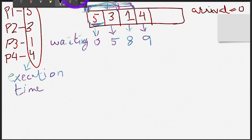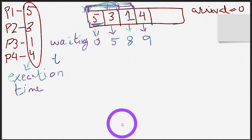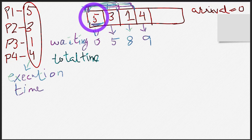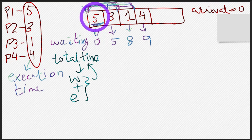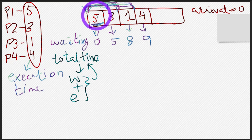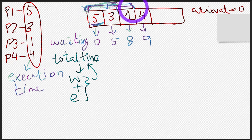That was the waiting time. The next concept is total time — let's see how much time these processes will spend in the queue. Total time is actually the time taken by any process to execute itself and to wait. So total time equals waiting time plus execution time. The total amount of time you spend in the queue is the time you did your own work plus the time you waited for all the other people before you.